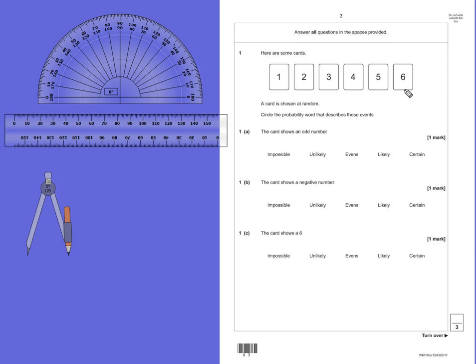2, 4 and 6 are even, so 3 of them are even. There's the same number that are odd as there are even. So therefore it's an even chance - an even chance it will be odd or it won't be odd. So we're going to circle evens.